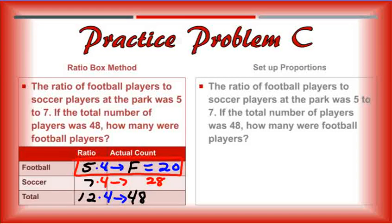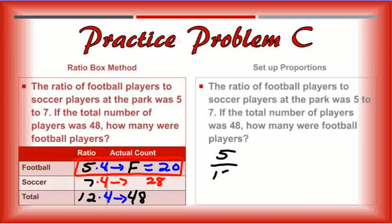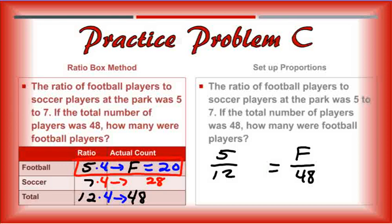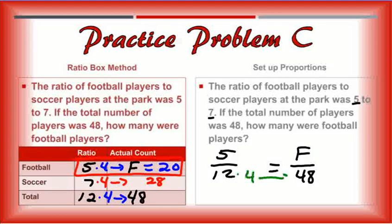And the last one here is setting up proportions. So the ratio of football players to soccer players was 5 to 7. So this is the same problem. If you weren't going to do the ratio boxes, but you're going to set up proportions, you would set it up as 5 is to 12 as football players is to 48. Now you notice I didn't have 12 in here. You need to know if you're setting up proportions that there's a total of 12 in the ratio. And then you just solve it the same way that we just did over here. 12 times 4 gives you 48. Five times 4 gives you F, which is 20.